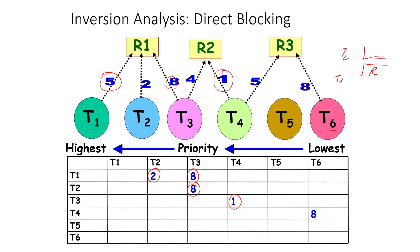T5, since it doesn't need any resource, will never have direct blocking. T4 can get blocked because T6 will acquire the resource for eight time units.